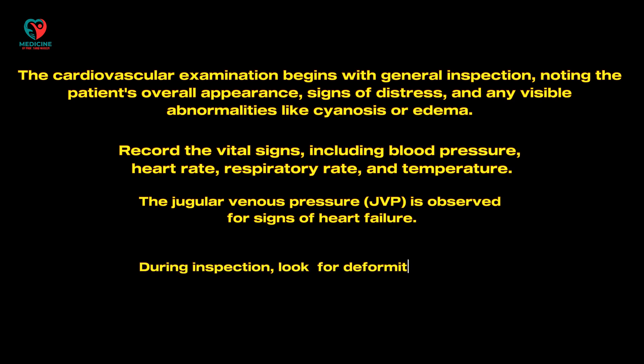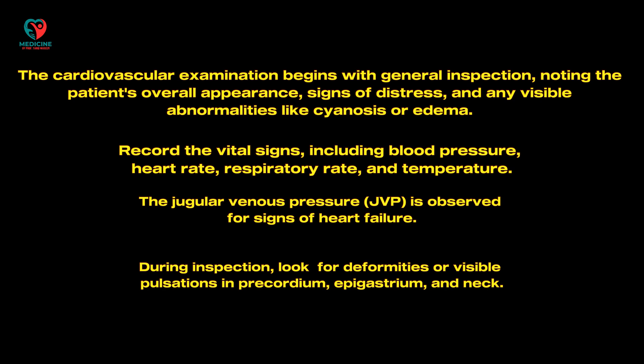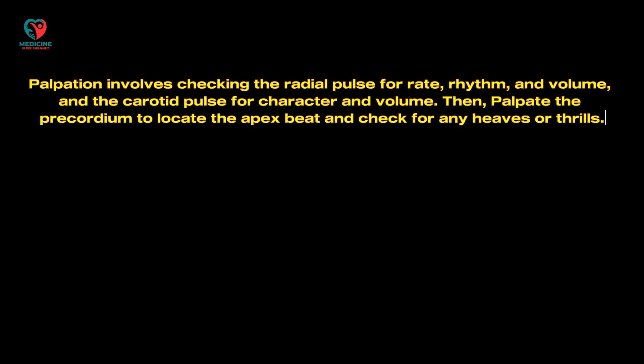During inspection, look for deformities or visible pulsations in the precordium, epigastrium, and neck. Palpation involves checking the radial pulse for rate, rhythm, and volume, and the carotid pulse for character and volume. Then palpate the precordium to locate the apex beat and check for any heaves or thrills.